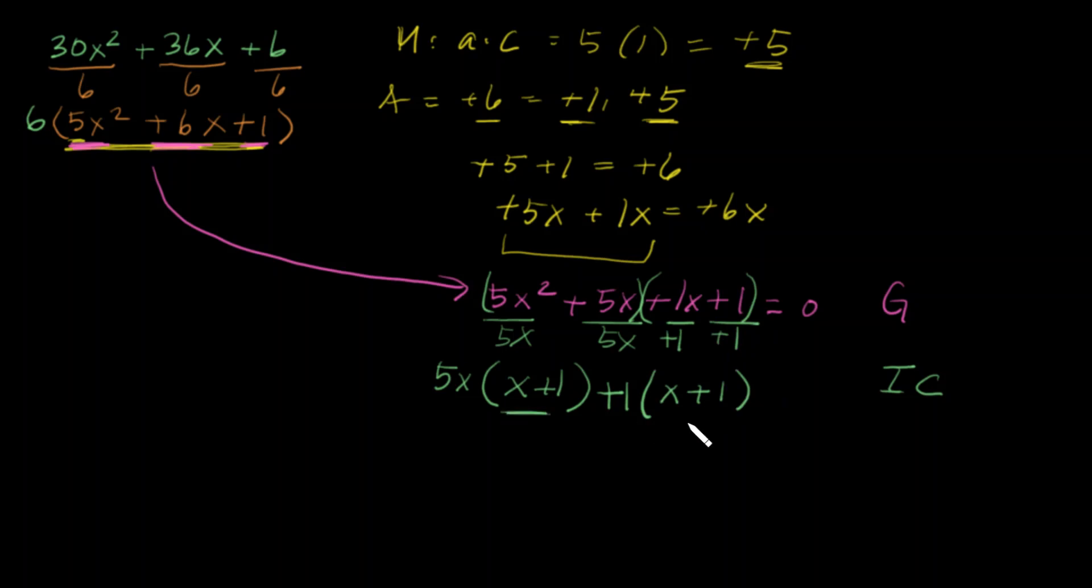Notice that this binomial and this binomial is in common. Well, I'm going to go ahead and take that out because you can take that out now. When I take out an x plus 1, I'm dividing this by x plus 1. I'm also dividing this by x plus 1. What do I have left over? X plus 1. I can go ahead and simplify that. I have 5x plus 1.